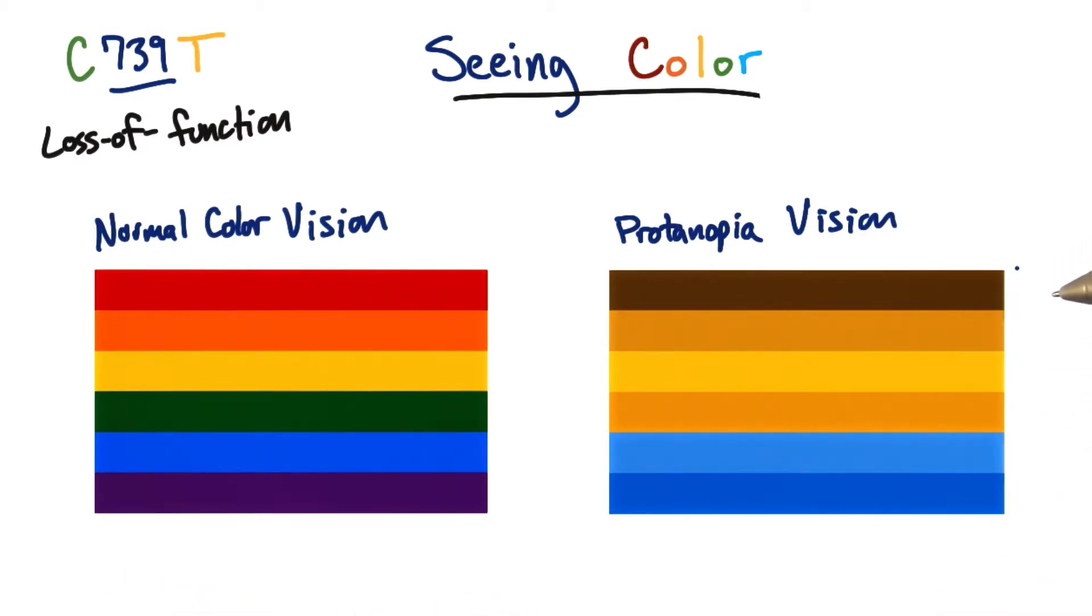Proteinopia is a severe type of color division deficiency caused by the complete absence of the red photoreceptors like OPN1LW.